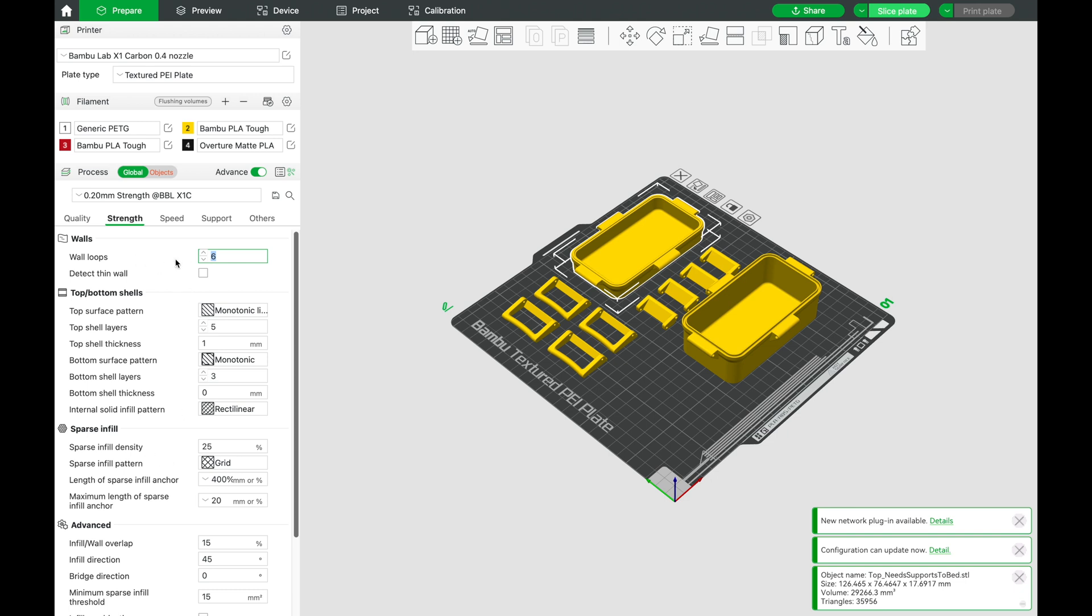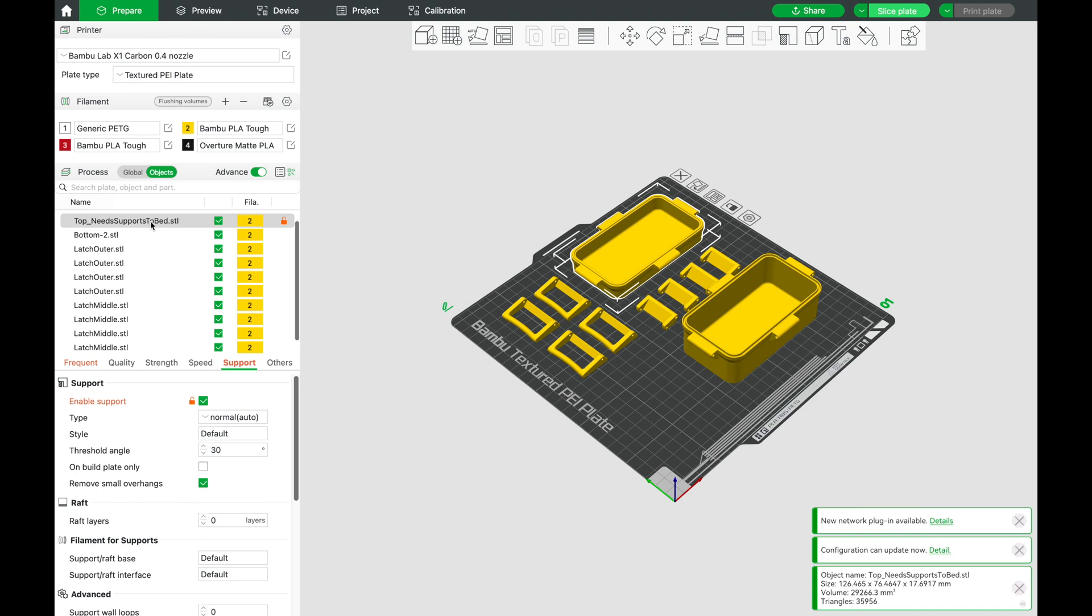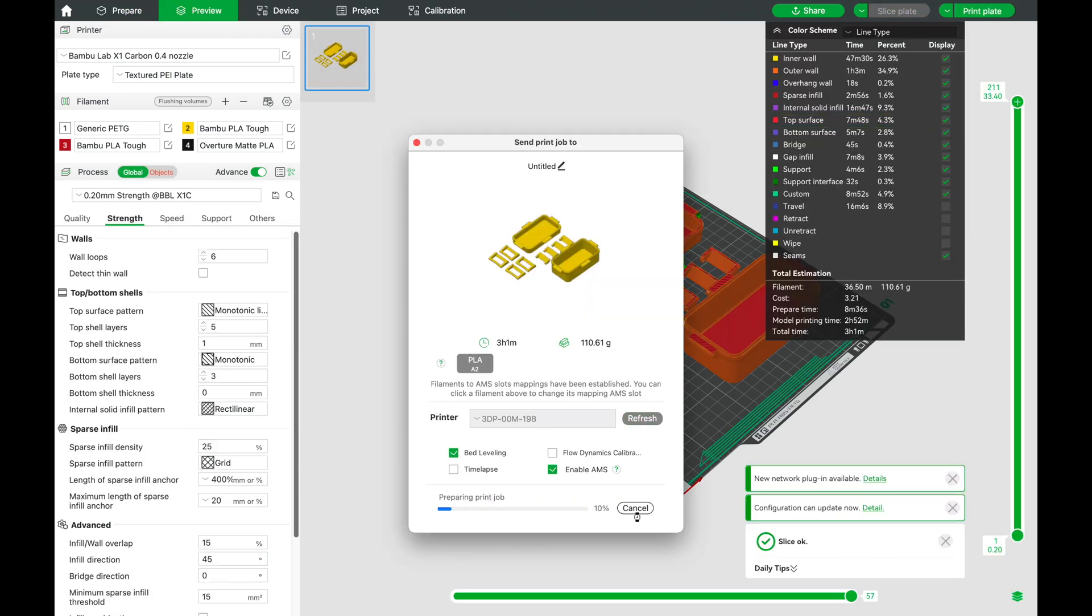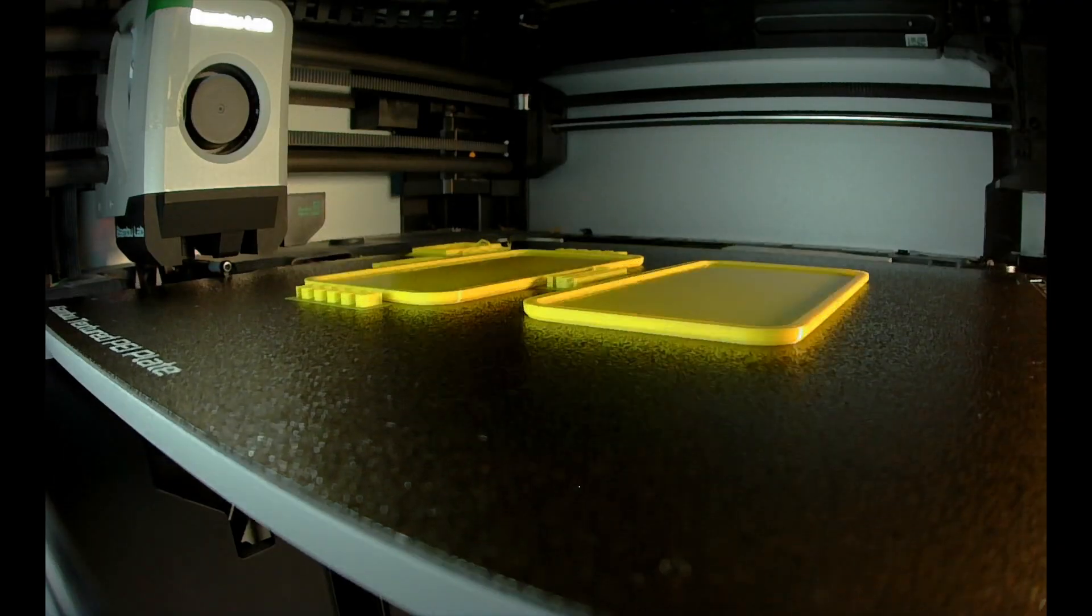And once we brought the files into Bamboo Slicer, everything loaded really nicely. One thing to note is that the lid will need some supports. Other than that we should be good to go, so let's see how it turns out.